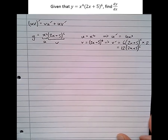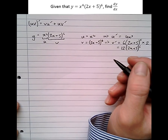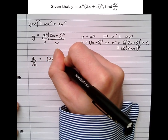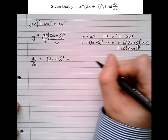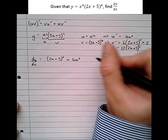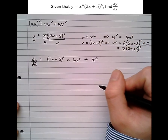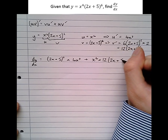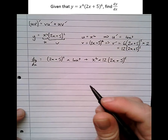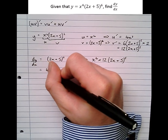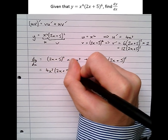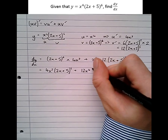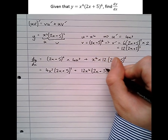Now substituting that into the formula — v·u dash plus u·v dash — we get dy/dx equals v, which is (2x plus 5) to the power of 6, times u dash, which is 4x cubed, plus u, which is x to the power of 4, times v dash, which is 12(2x plus 5) to the power of 5. Tidying that up: 4x cubed times (2x plus 5) to the power of 6, plus 12x to the power of 4 times (2x plus 5) to the power of 5.